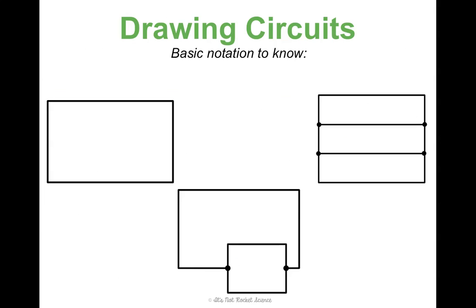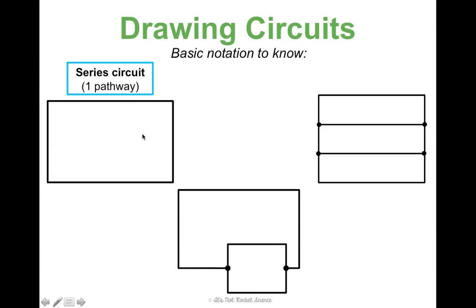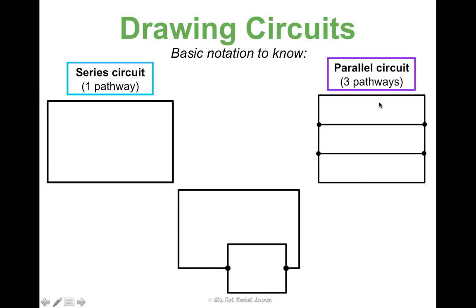One skill I want you to learn is how to draw circuits, so we need to learn some basic notation. Series circuits are super nice because they're just one pathway — whenever you're drawing a series circuit, just start by drawing a rectangle; that's your pathway, and then you add things to your rectangle. For a parallel circuit, you basically draw your rectangle but add some bars in the middle of it. This parallel circuit shows three different pathways — you could go through pathway one, pathway two, or pathway three.